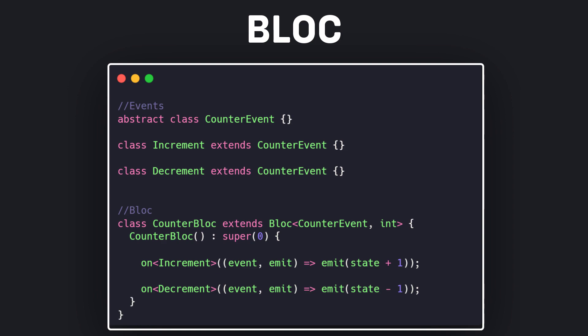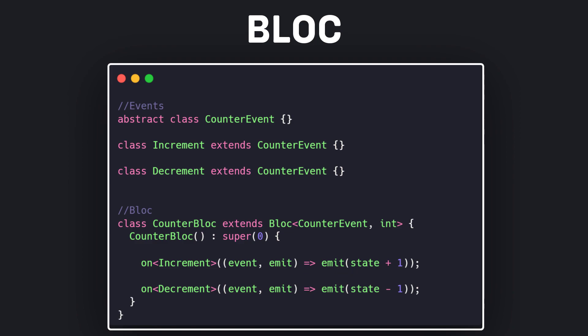There is no special difference, but cubit is much simpler and we use methods instead of events. When we use bloc, we need to define classes for events — we have to define an abstract class and then other classes extend it, because all events must have the same type. I explained about this in the previous parts, so if you want to learn bloc from scratch, be sure to watch the previous videos.